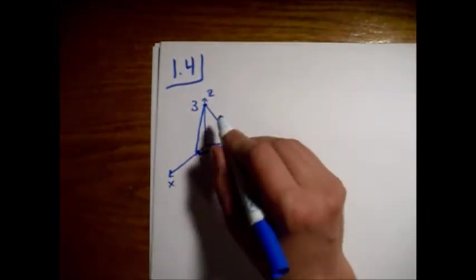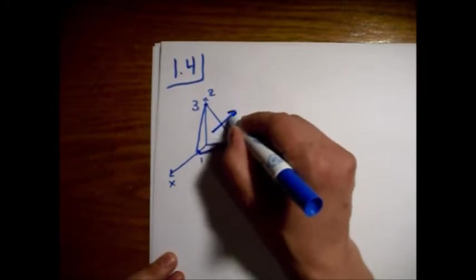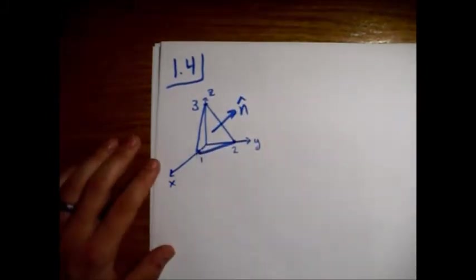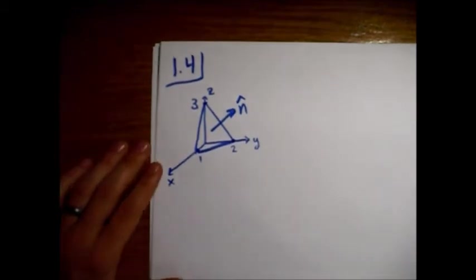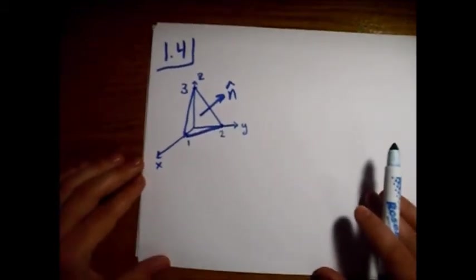Okay, and the n-hat vector is coming out of the plane, normal to this plane.